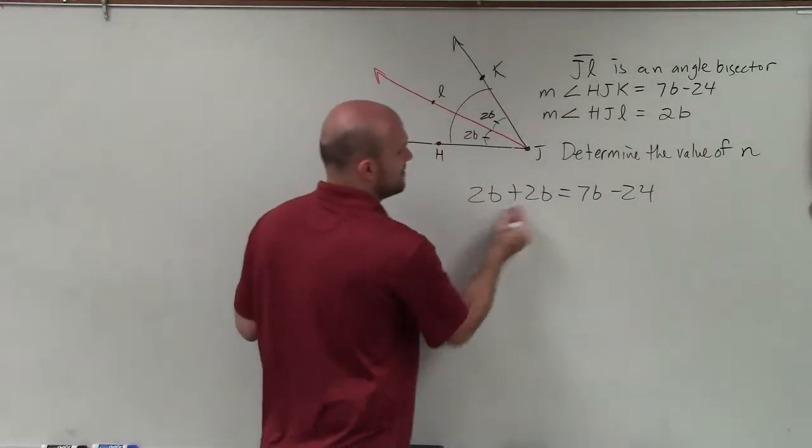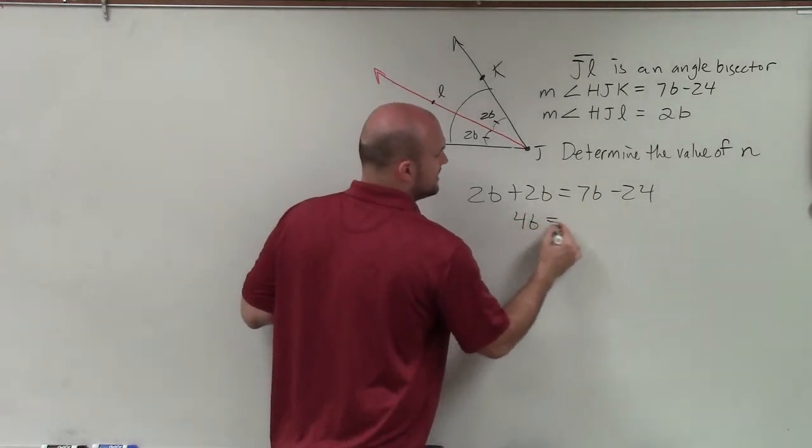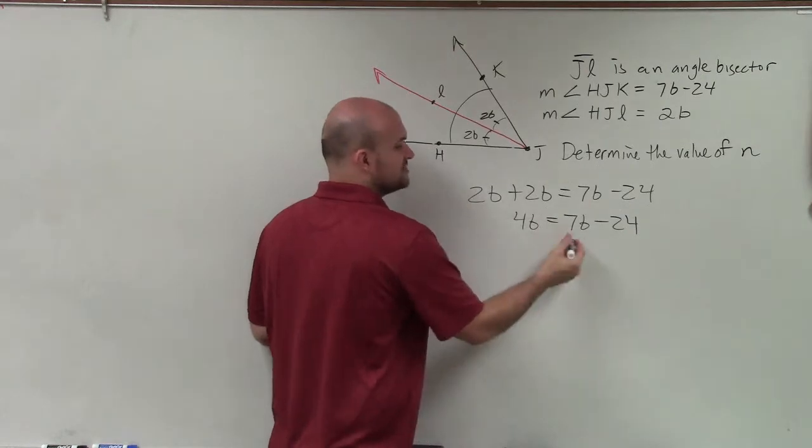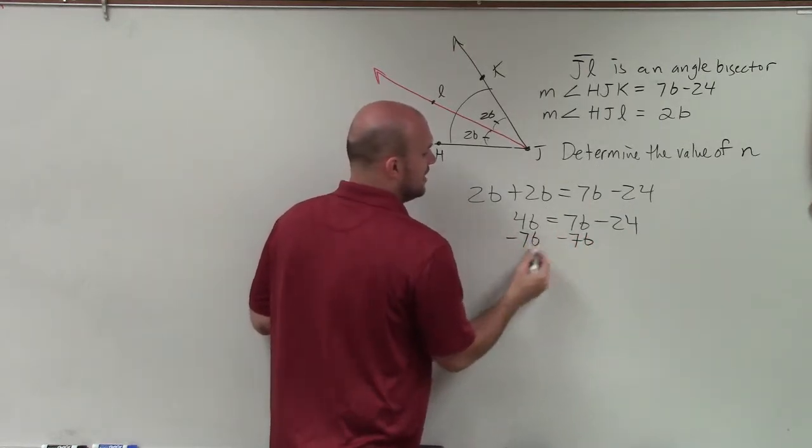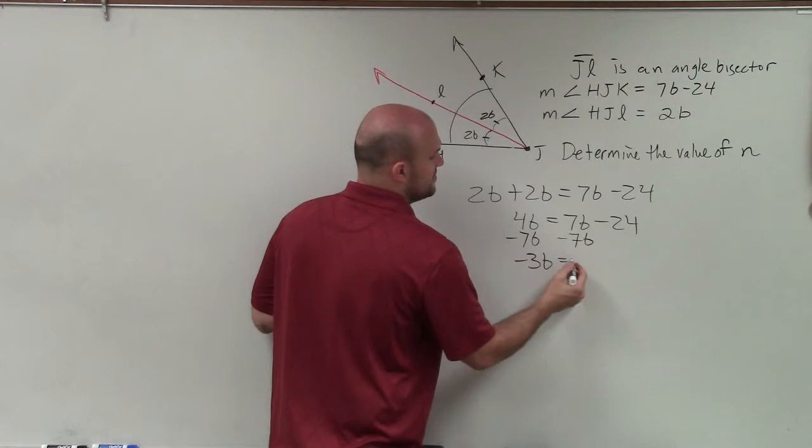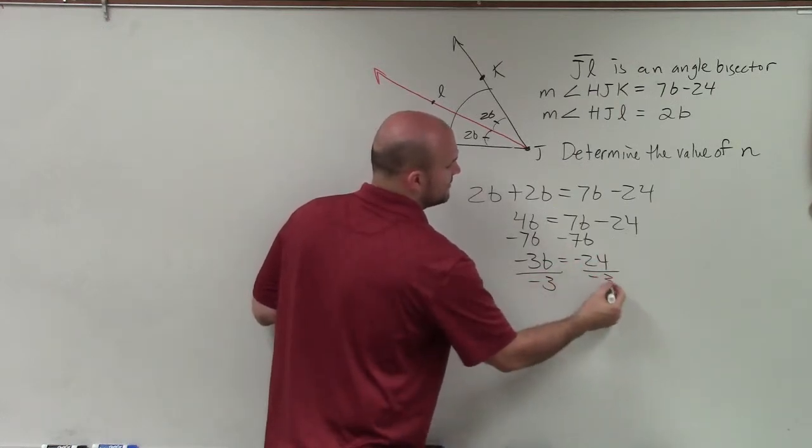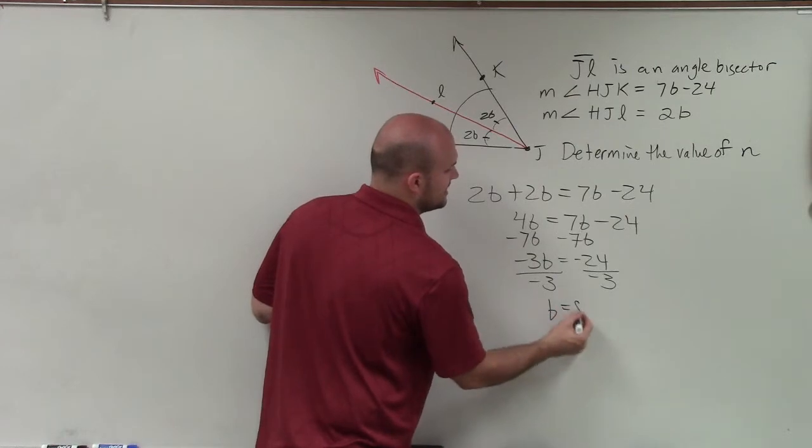So now I can combine my like terms on my left side. So I have 4B equals 7B minus 24. Now I'll get the variables to the same side. So I'll subtract 7B on both sides. And I'm left with negative 3B equals negative 24. Then, to divide out a negative 3. And my final answer is B equals 8.